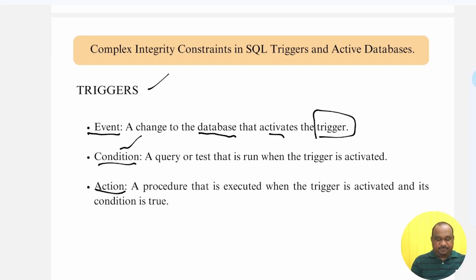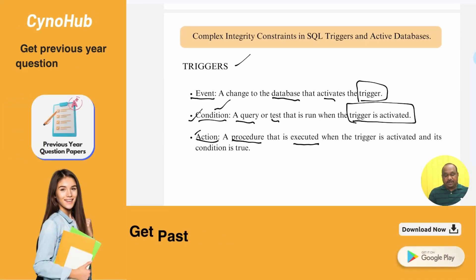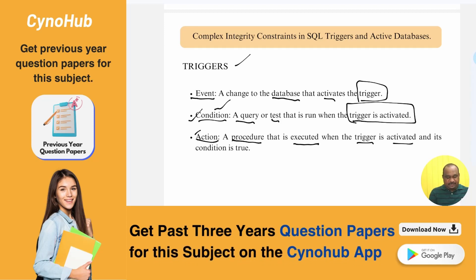Then condition, based on specified condition like a query or test that is run when the trigger is activated. When the trigger is activated based on the condition, what is the next step? The action will be performed. Action is a procedure that is executed when the trigger is activated and its condition is true. Whenever we are writing a trigger part, these three parts are required: event, condition and actions.